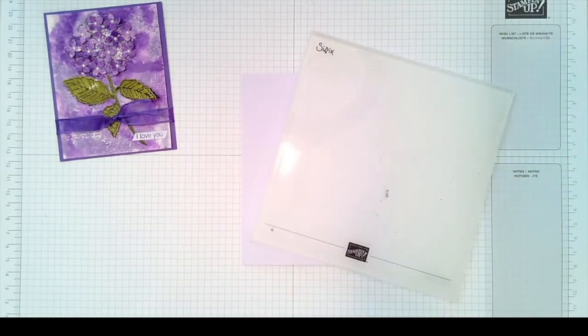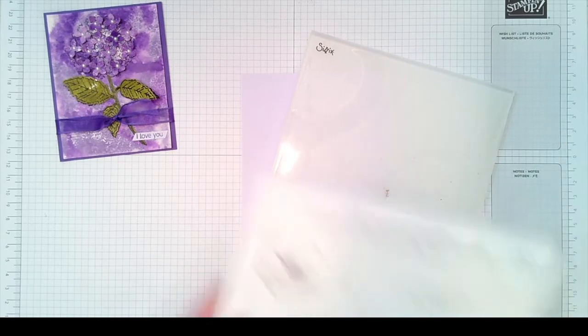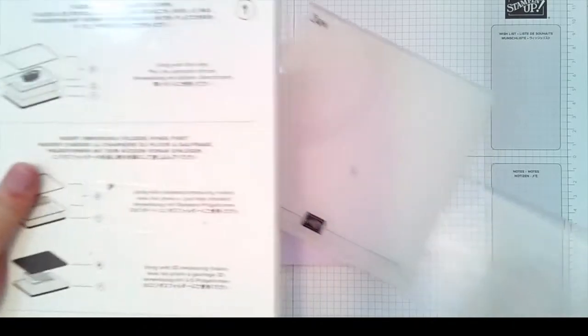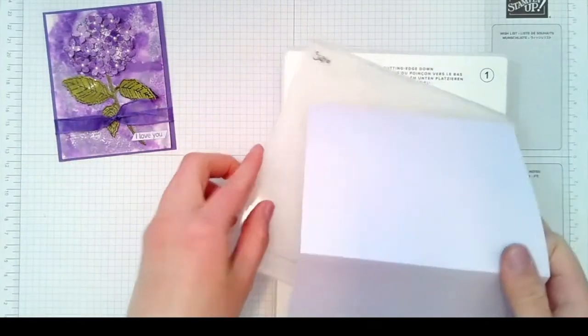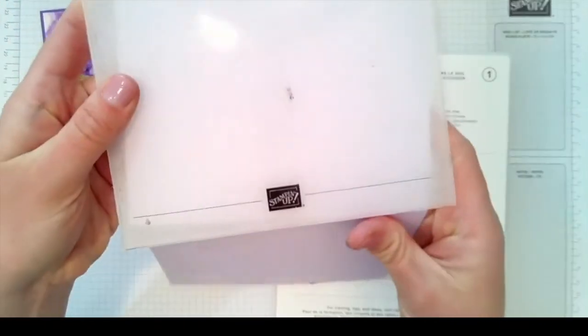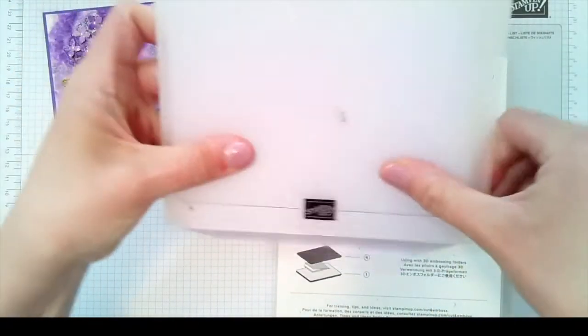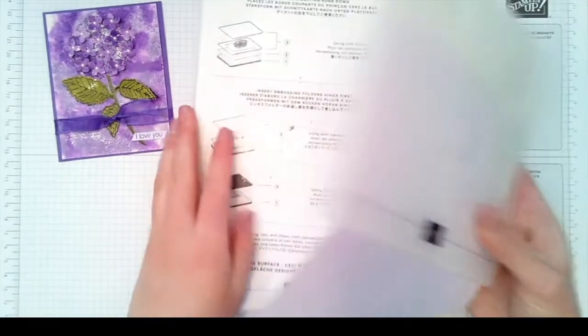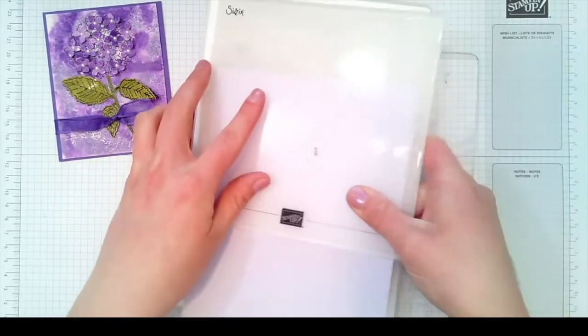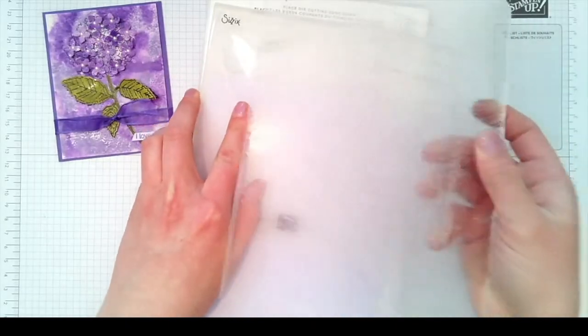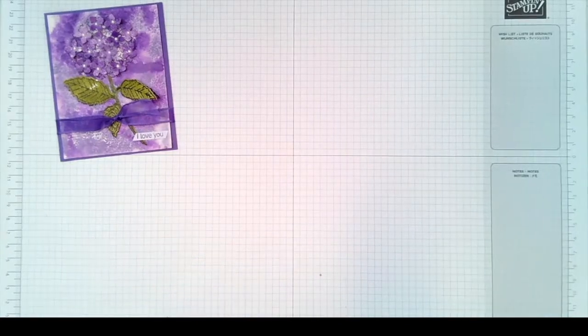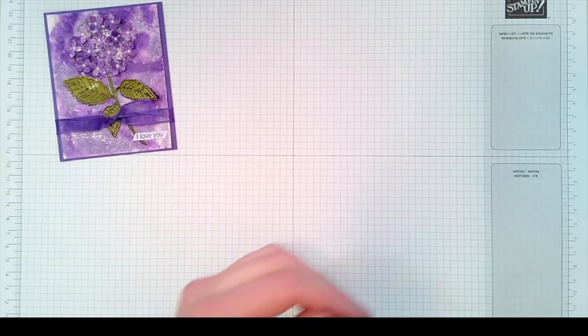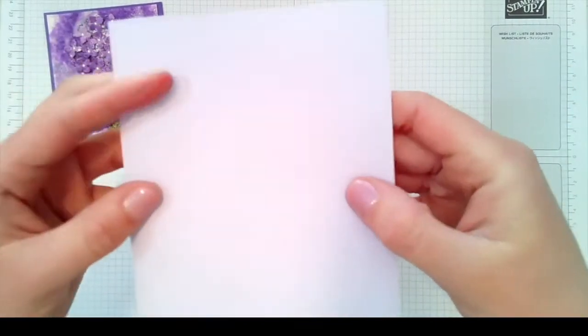You will take your big shot platform and you will need the number one. We will insert the cardstock into your embossing folder here. You'll place that down on the number one and then you'll have the number three or your plexiglass plate on top. You'll run this through the die cutting machine. When you finish, you should end up with something that looks like this.